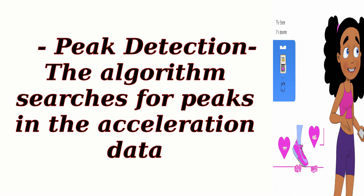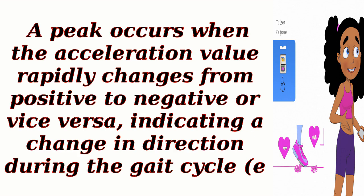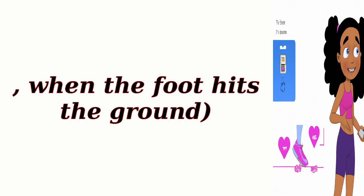Peak Detection. The algorithm searches for peaks in the acceleration data. A peak occurs when the acceleration value rapidly changes from positive to negative or vice versa, indicating a change in direction during the gait cycle — for example, when the foot hits the ground.